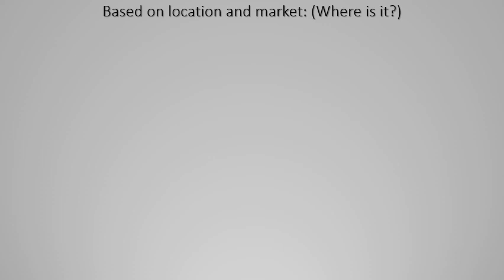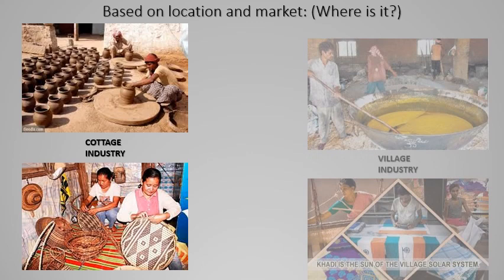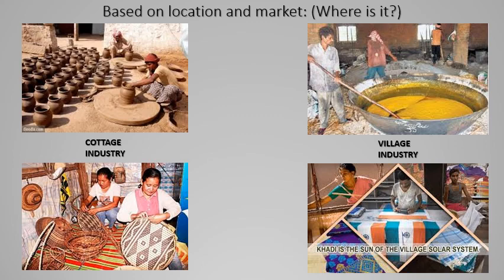Based on location and market — urban industries include government sector oil companies, private sector IT companies, and joint sector dairy farms. Village industries involve groups from throughout a village helping in production of food products or cloth weaving like khadi. Cottage industries happen in a particular home where just two or three people produce handicrafts, food products, or pottery in a small environment.